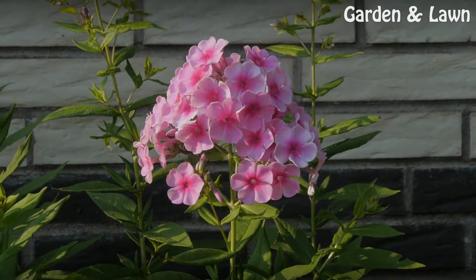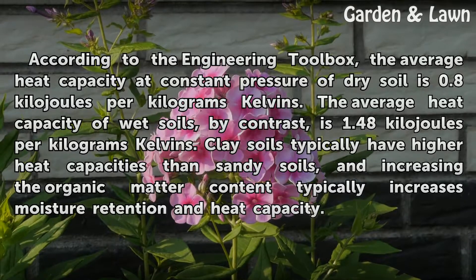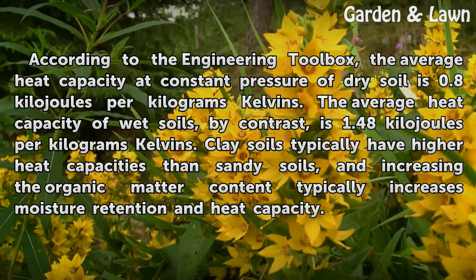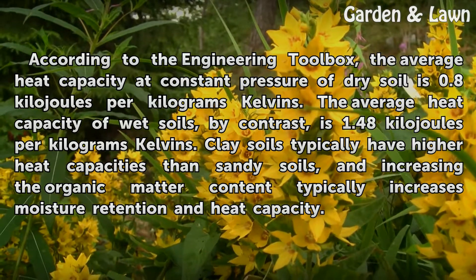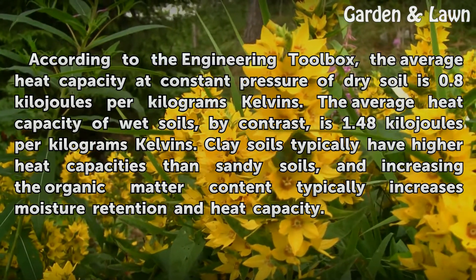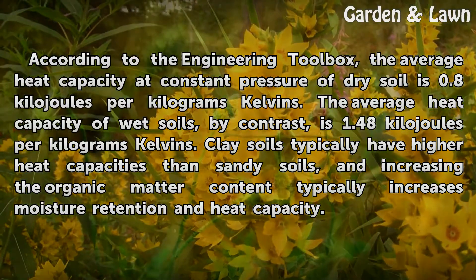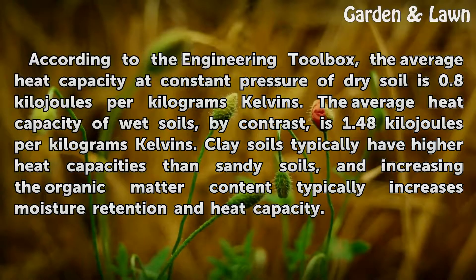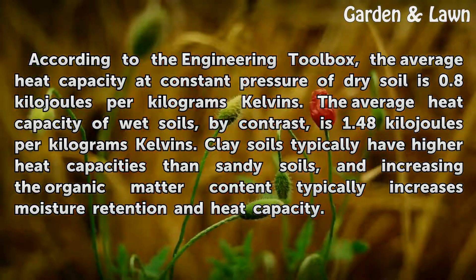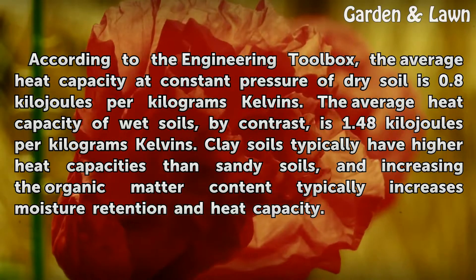Function. According to the Engineering Toolbox, the average heat capacity at constant pressure of dry soil is 0.8 kJ per kgK. The average heat capacity of wet soils, by contrast, is 1.48 kJ per kgK. Clay soils typically have higher heat capacities than sandy soils, and increasing the organic matter content typically increases moisture retention and heat capacity.